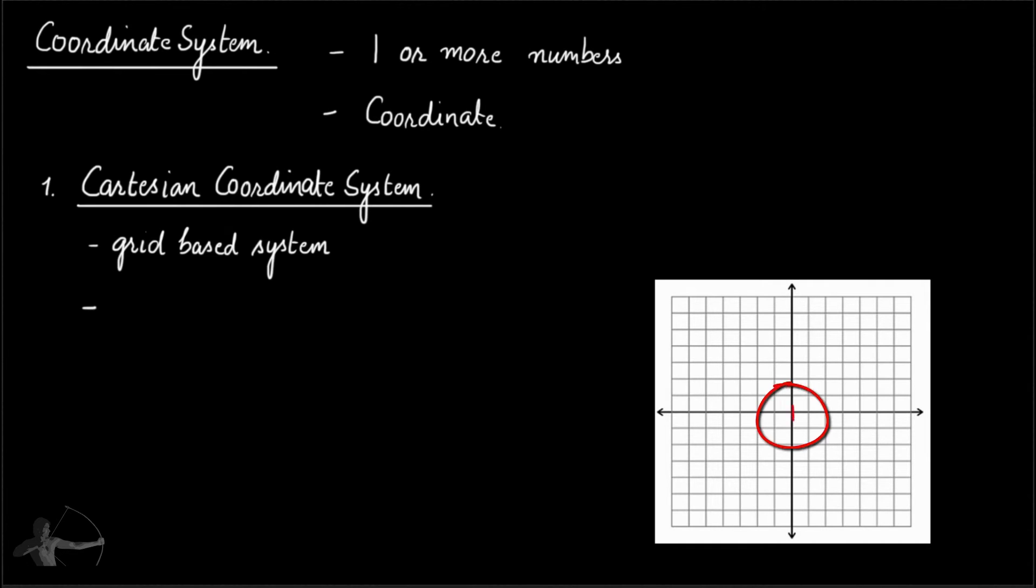So this is x axis and this is y axis. And the position of a point can be defined by the distance of the intersection of these perpendicular lines. So this is the intersection of the perpendicular lines and any point in this system can be defined by the distance. So this point is 2 units far in x axis and 3 units far in y axis. So this point will be defined as 2, 3. So this is Cartesian coordinate system.